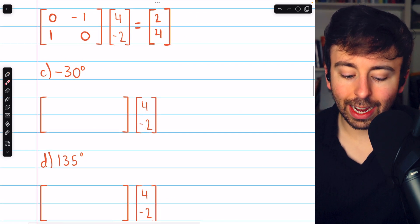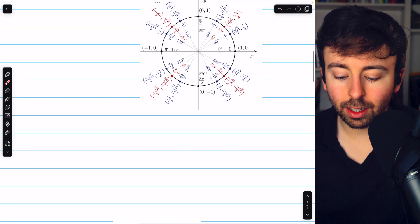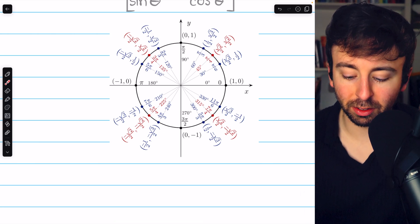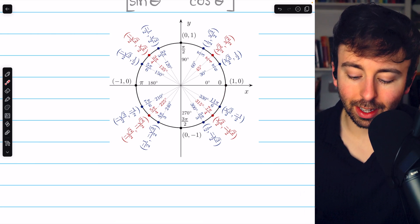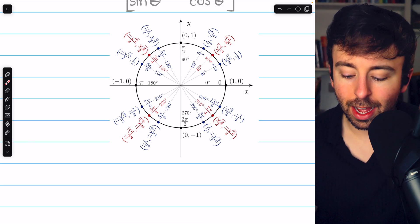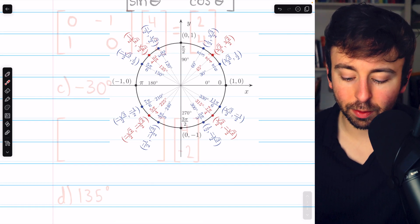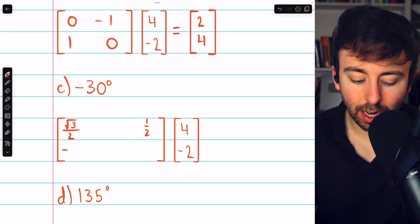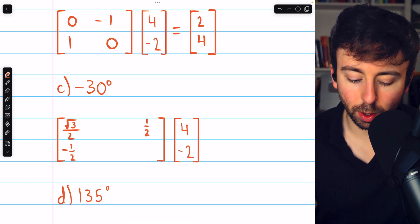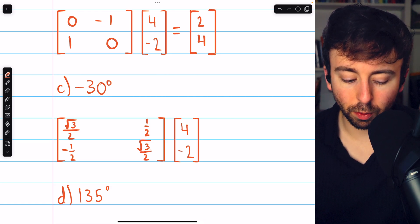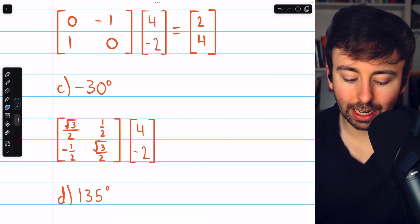Next, we'll do a rotation of negative 30 degrees. Looking at the unit circle, negative 30 degrees gets us to 11π/6. Cosine is √3/2, and sine is -1/2. Filling out this standard matrix, we have √3/2, and then negative sine, which is positive 1/2, and then sine, which is -1/2, and then cosine, which is √3/2. There is our standard matrix for a rotation of negative 30 degrees.